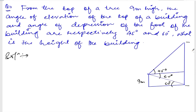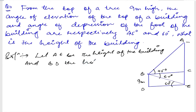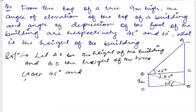Now I need to find the height of the building — from here to here. Let me name the points: A, B, C, D, E. Let AE be the height of the building and BD be the height of the tree. The angle ABC is equal to 45 degrees and angle DEB is equal to 60 degrees.